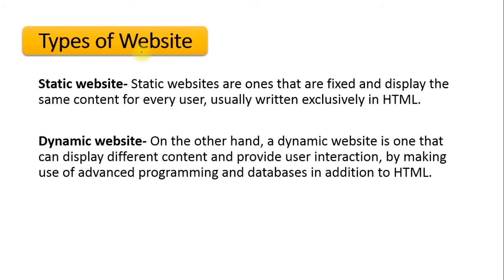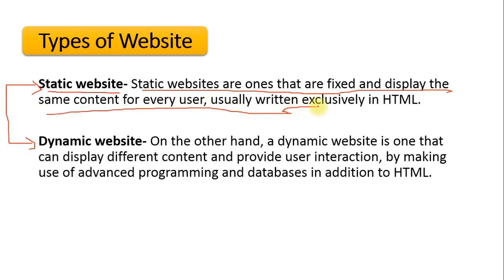Now we shall see the different types of websites. Depending on the type of information the user wants to deliver, websites are classified into two types: static websites and dynamic websites. Static websites are those that display the same content for every user and are usually written exclusively in HTML. Static websites do not require any interaction with the user — they display the contents of that webpage as it is to all users who access that website.